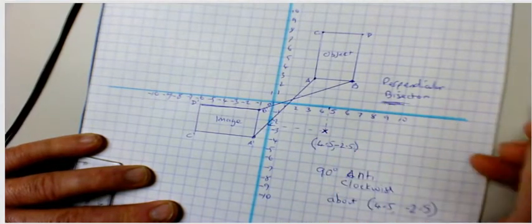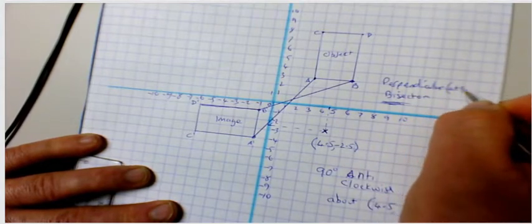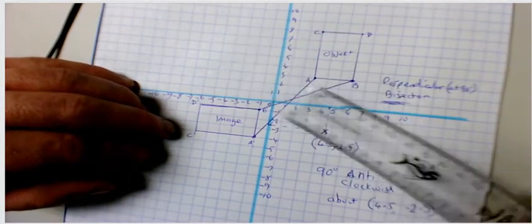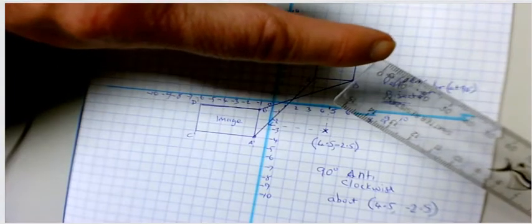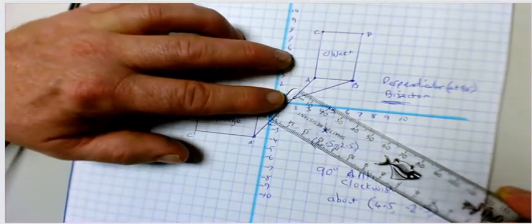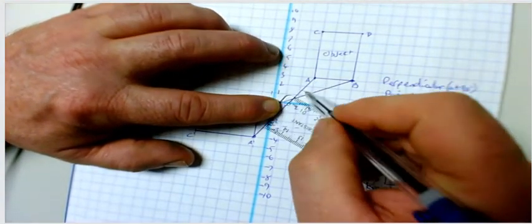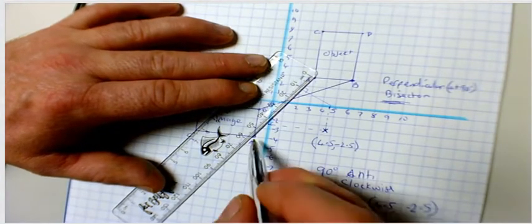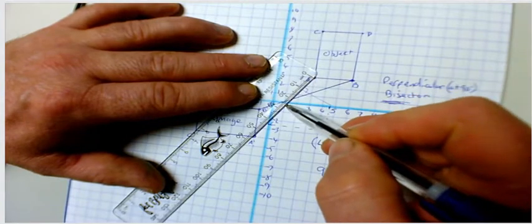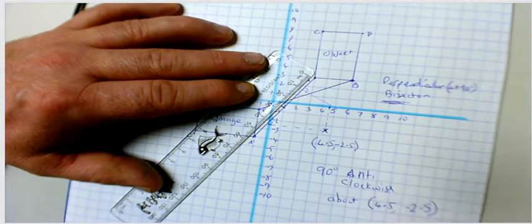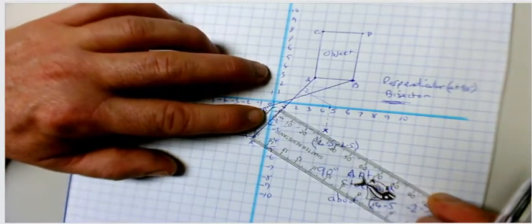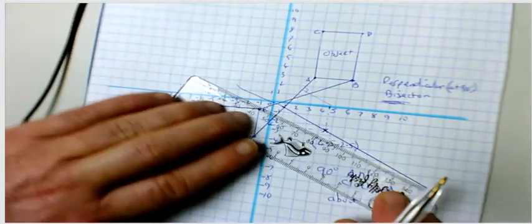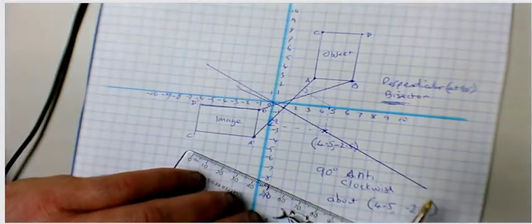Perpendicular means at 90 degrees, and bisect means to cut in half. A useful trick with a ruler: use the marks at 15 and 0 — line those up on your line, and any line you draw off that will be at 90 degrees. Find the halfway point — in this case the line is five and a half centimeters, so halfway is two and three quarter centimeters. Place the ruler marks on the line and draw your bisector at 90 degrees.